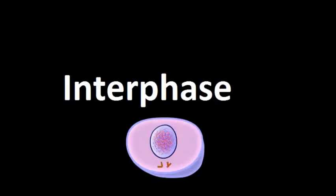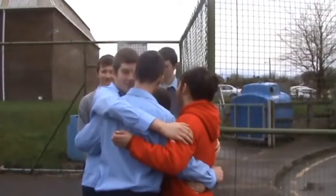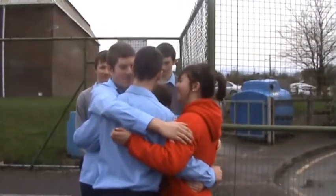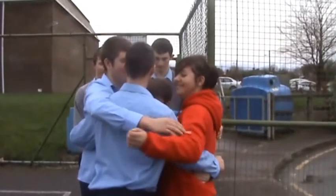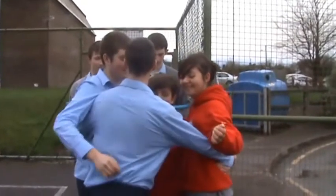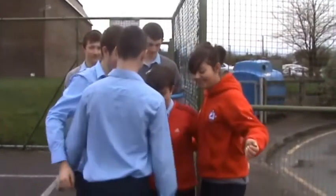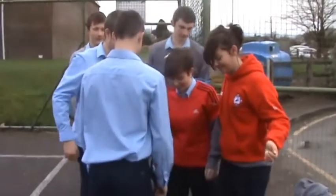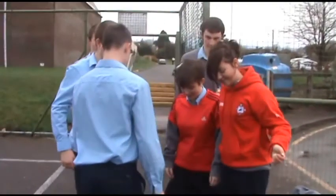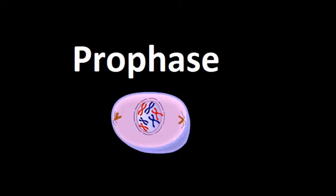So, at the start, interphase. These students are representing chromatin, which are long, thin, thread-like structures knotted on top of each other. The two boys in grey on the outside of the nucleus are called centrioles.